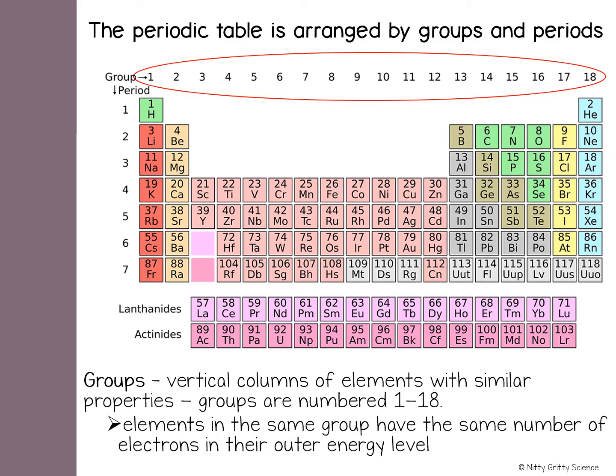The periodic table is organized by row and column. Each vertical column is called a group, which has similar properties. The groups are numbered 1 through 18. Elements in the same column or group have the same number of electrons in their outer energy level.